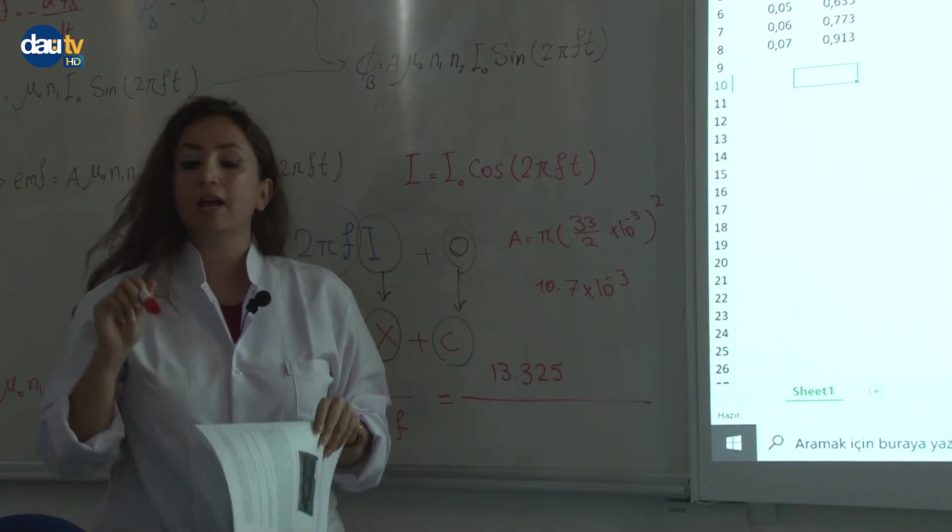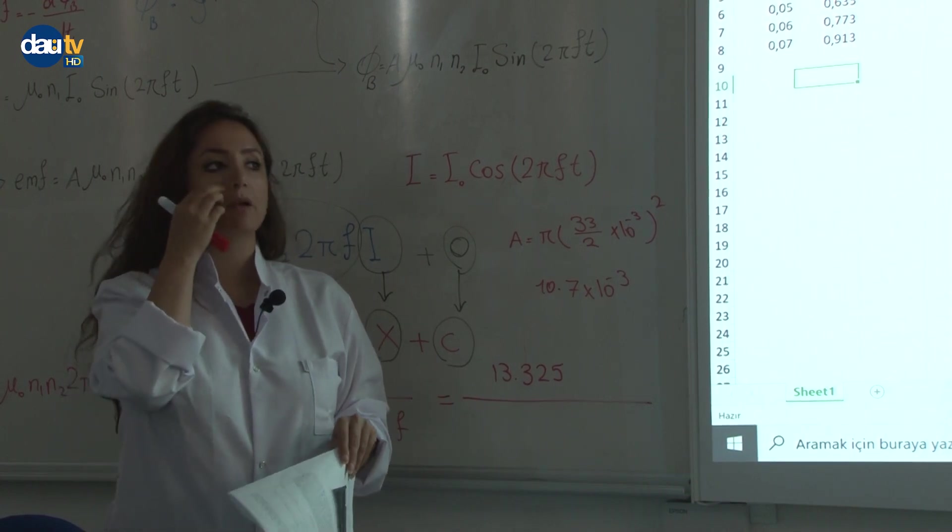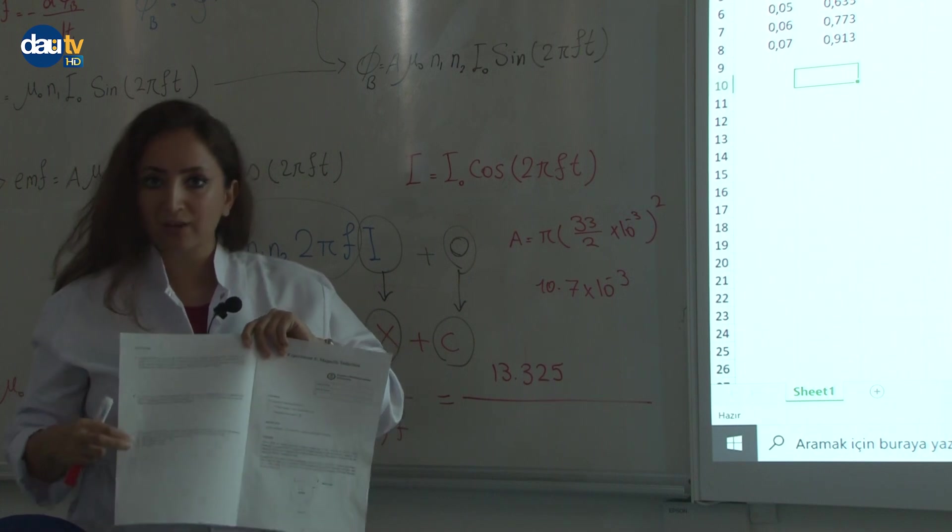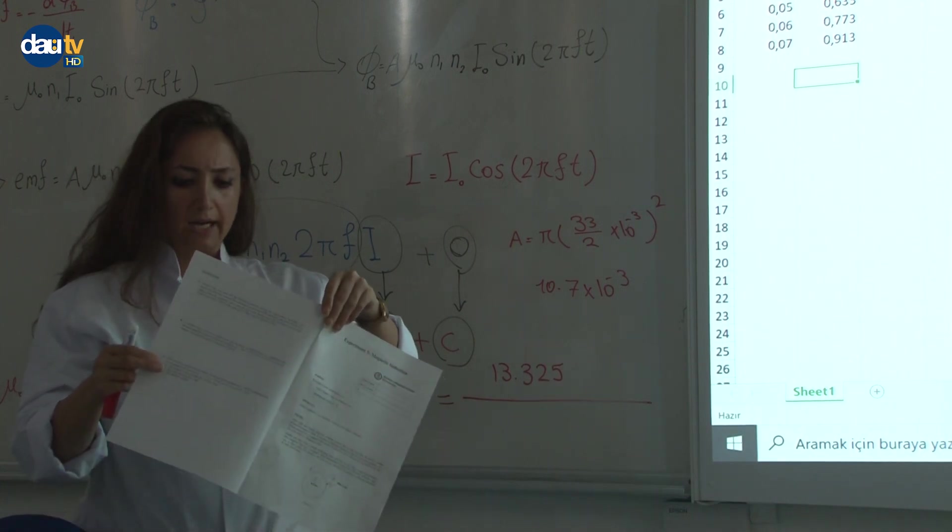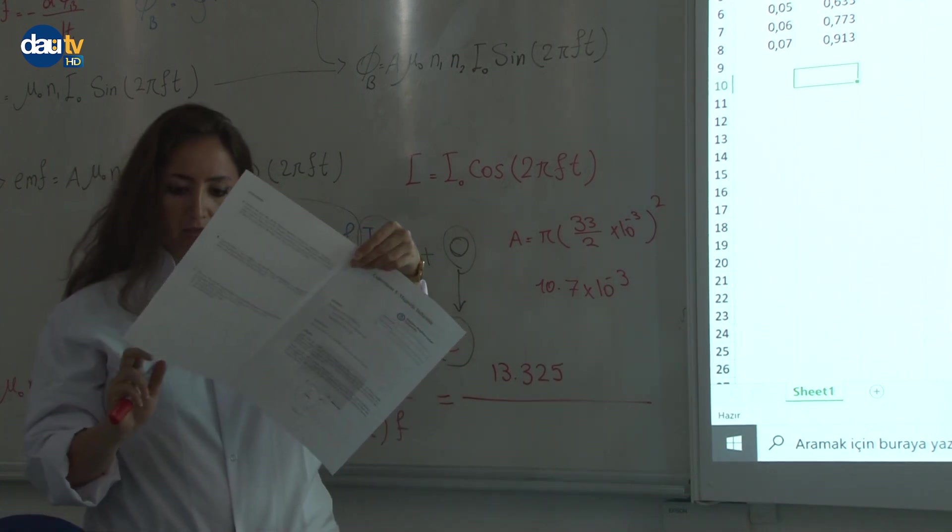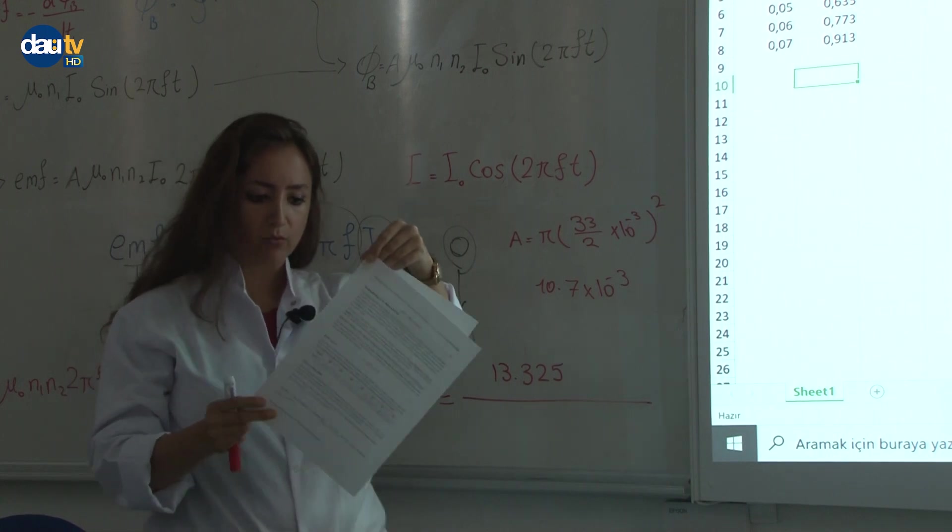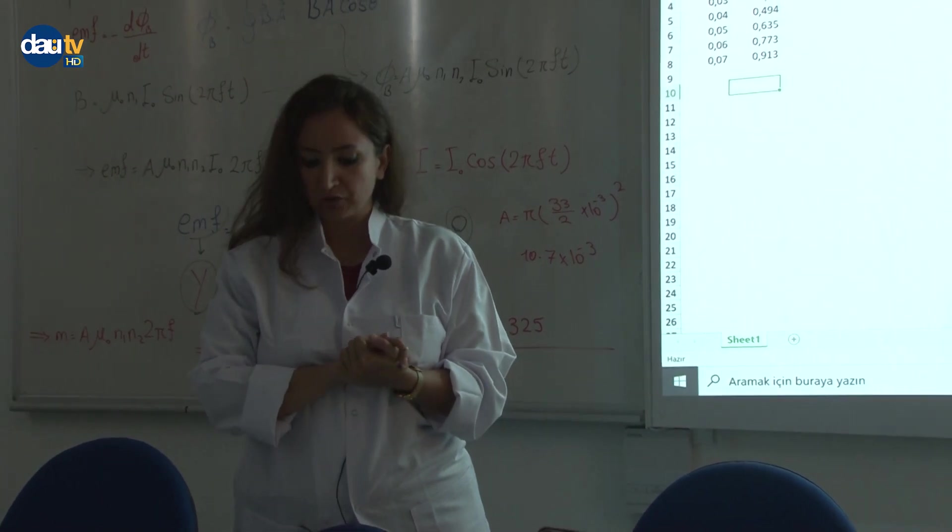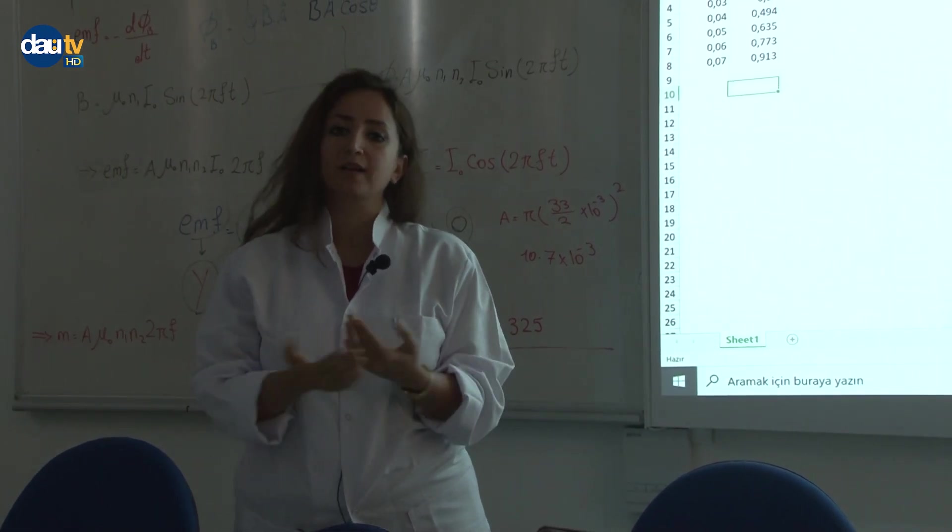When you enter all this data, the experimental mu zero over 4 pi, we have the real value as well, 10 to the power of minus 7. Define the error percentage for us in this experiment and we have some questions that we expect you to answer. I think there is nothing more in this manual. This experiment is done. If you have any questions you know how to find us.